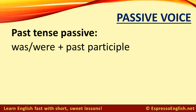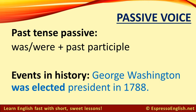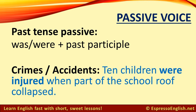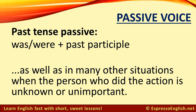To form the passive voice in the past tense, use 'was' or 'were' plus the past participle. We often use the passive voice in the past tense for events in history — for example, George Washington was elected president in 1788 — as well as crimes and accidents: two people were killed in a drive-by shooting on Friday night; ten children were injured when part of the school roof collapsed.